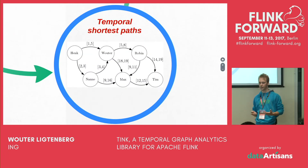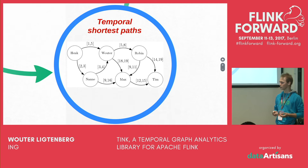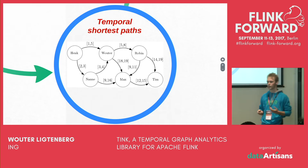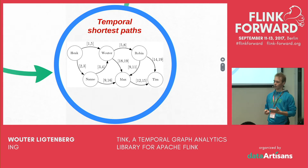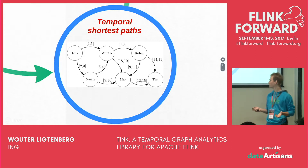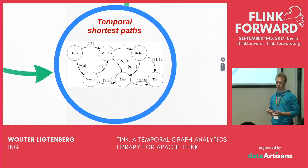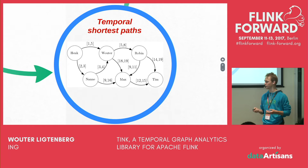When we have these temporal graphs, we can also think about temporal shortest paths. There are many different definitions of temporal shortest path. For example, you could think of what is the earliest arrival time to get somewhere, or you want to get somewhere at a specific time — when is the latest time you can leave? Or for example when you're flying, for every flight from one airport to another, you want to know what is the least amount of time you will have to spend in the air.